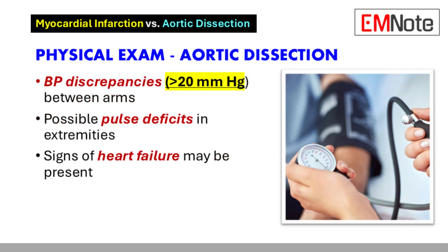In aortic dissection, blood pressure discrepancies greater than 20 mmHg between the arms are significant indicators. Pulse deficits may also be noted in extremities if major arteries are involved. Signs of heart failure or a diastolic murmur may be present if the aortic valve is affected. These findings are essential for differentiating aortic dissection from myocardial infarction.